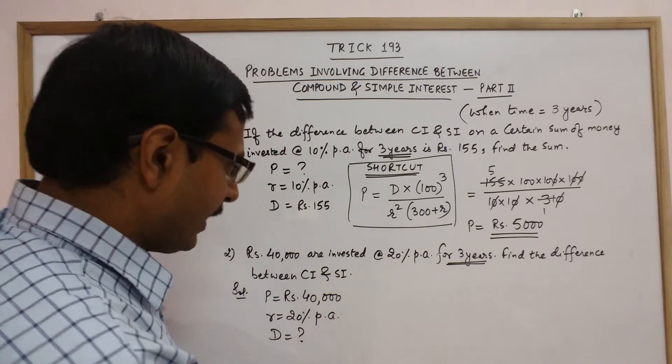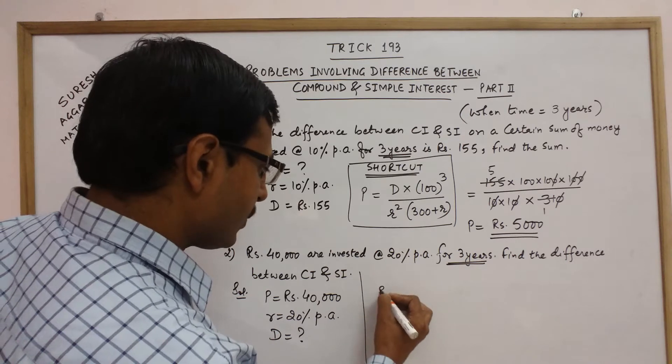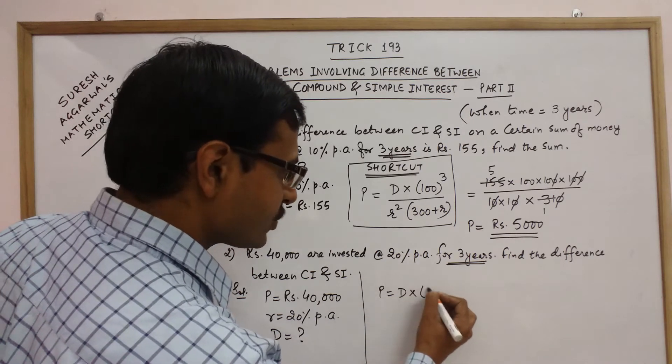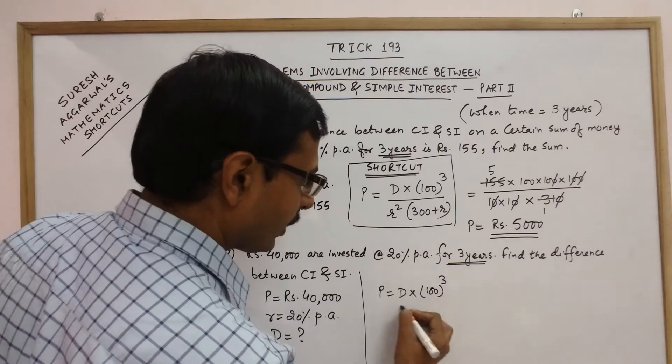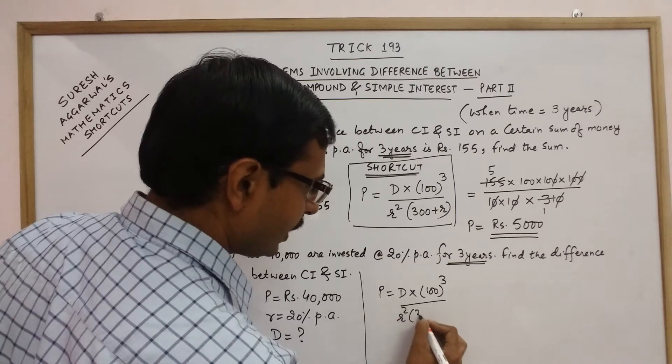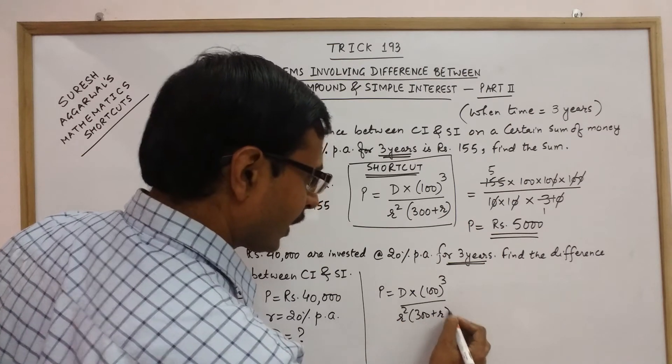Let us solve this now. Apply the same formula again. P is equal to D into 100 raised to the power 3 upon R square into 300 plus R.